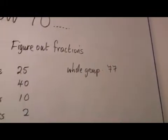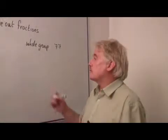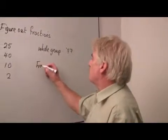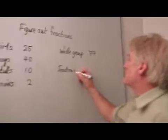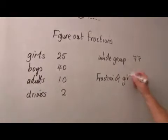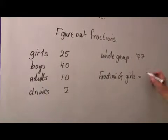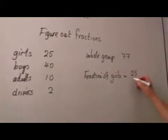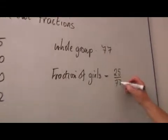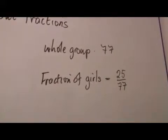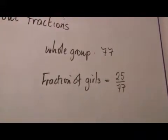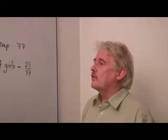So, out of seventy-seven people, what fraction is girls? So, the fraction of girls would be, well, there's twenty-five girls. Twenty-five seventy-sevenths of the group. This might be a useful piece of information to know. The twenty-five seventy-sevenths are, in fact, girls.